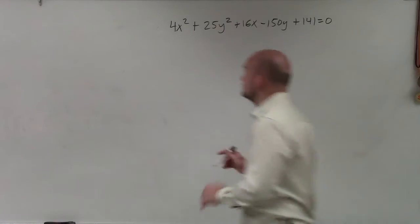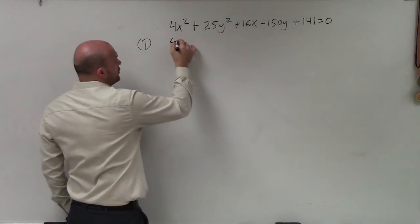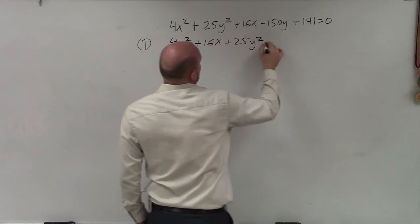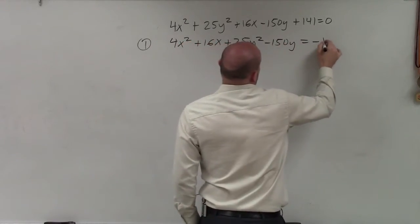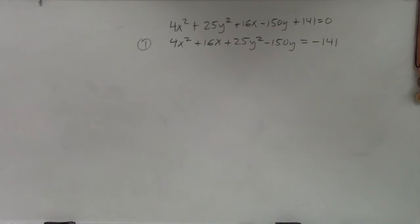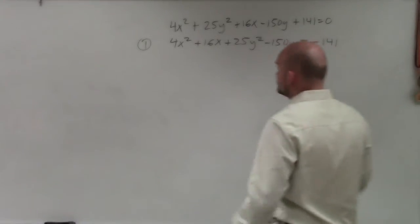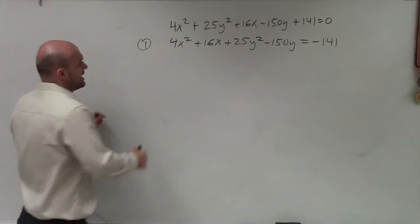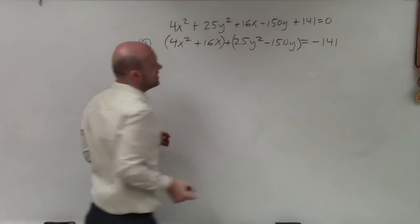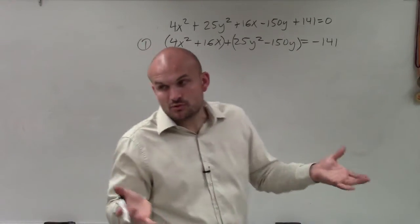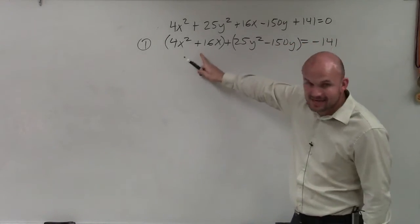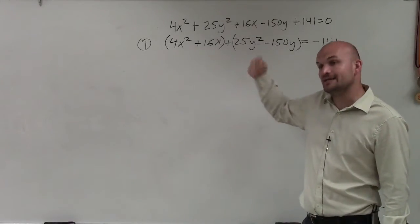So the first thing I want to do, kind of like step number one, is group your x's and your y's. I'm grouping my x's and my y's just so I have everything combined together. And then I put my constant over on the other side. Now, what I need to do is put parentheses around. I need to create a binomial squared out of my x's and my y terms, right? I need that x minus h squared. So I need to rewrite this as a perfect square. So to do that, I need to complete the square.